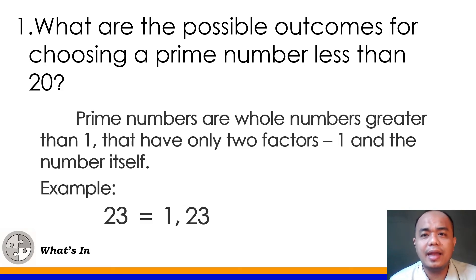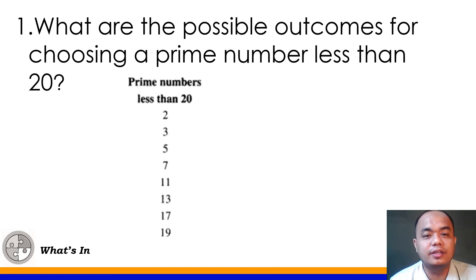Ngayon, ilan ba lahat yung mga prime numbers from 1 up to 20. You have to identify that para malaman natin yung sagot sa number 1. Yes, very good. These are the prime numbers and the possible outcomes when we talk about prime numbers less than 20. We have 2, 3, 5, 7, 11, 13, 17, and 19. So yan ang mga prime numbers less than 20. So yan yung sagot sa number 1. Yan yung mga possible outcomes natin.